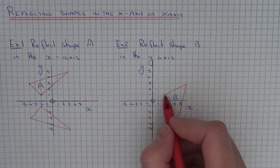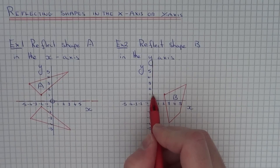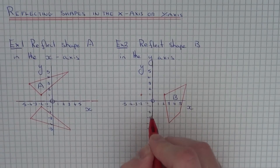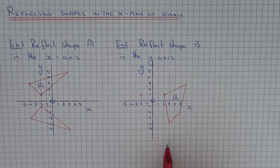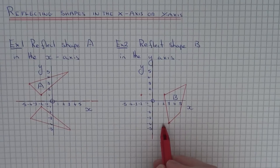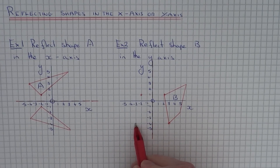So let's start with the easiest corner first. This one is two squares to the y axis, so it's two squares away from the y axis. This one down here is three squares to the y axis, so it's three squares away from the y axis.